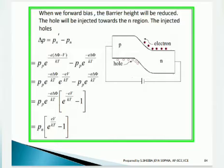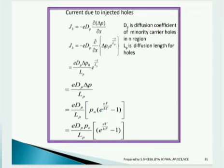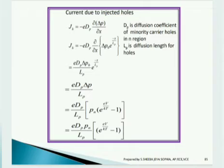Now, the current due to injected holes is Jh = e · Dp · (dΔp/dx), where Dp is the diffusion constant of minority carrier holes in the n-region and Lp is the diffusion length for holes. Partially differentiating Δp with respect to x gives: Jh = (e · Dp · Δp) / Lp. Substituting Δp = pn · (e^(eV/kT) − 1), we get: Jh = (e · Dp · pn / Lp) · (e^(eV/kT) − 1). This is the current due to injected holes.